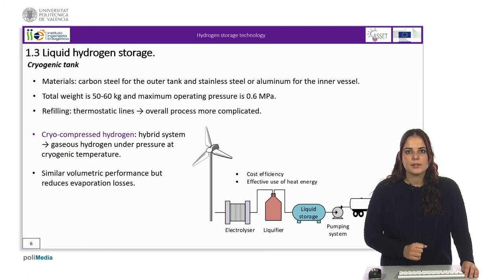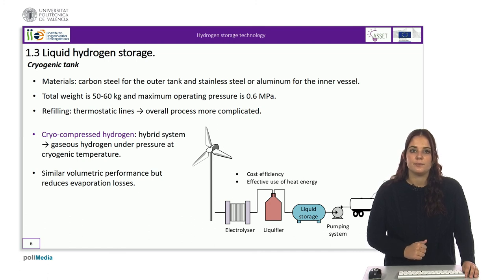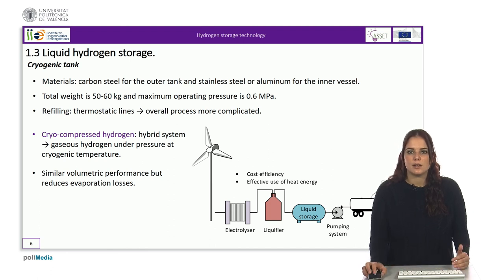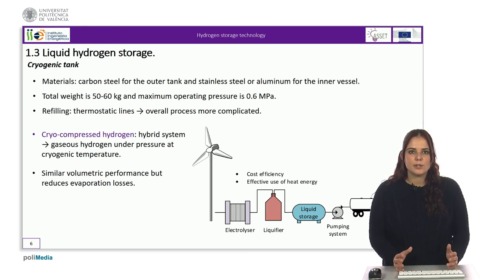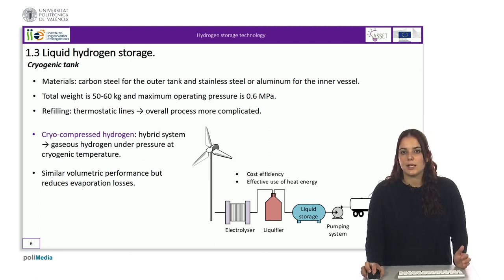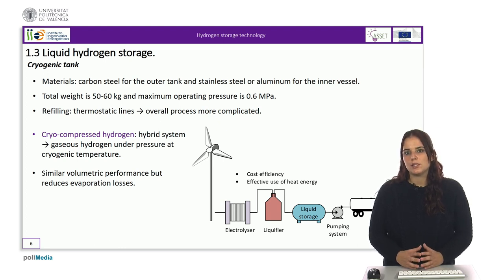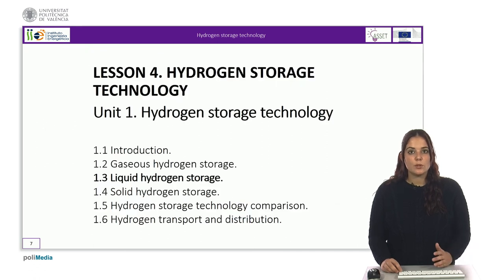Even so, liquid hydrogen storage systems can be 4 to 10 times larger and heavier than an equivalent tank of gasoline. Currently, a hybrid system between compression and liquefaction, the so-called cryocompressed hydrogen, is now being studied. It contains gaseous hydrogen under pressure but at a cryogenic temperature of minus 196.15 degrees Celsius achieved by liquid nitrogen. This system has similar volumetric performance as liquefaction but considerably reduces evaporation losses as well as the energy consumed. With this, we conclude the part of the unit about liquid hydrogen storage possibilities.